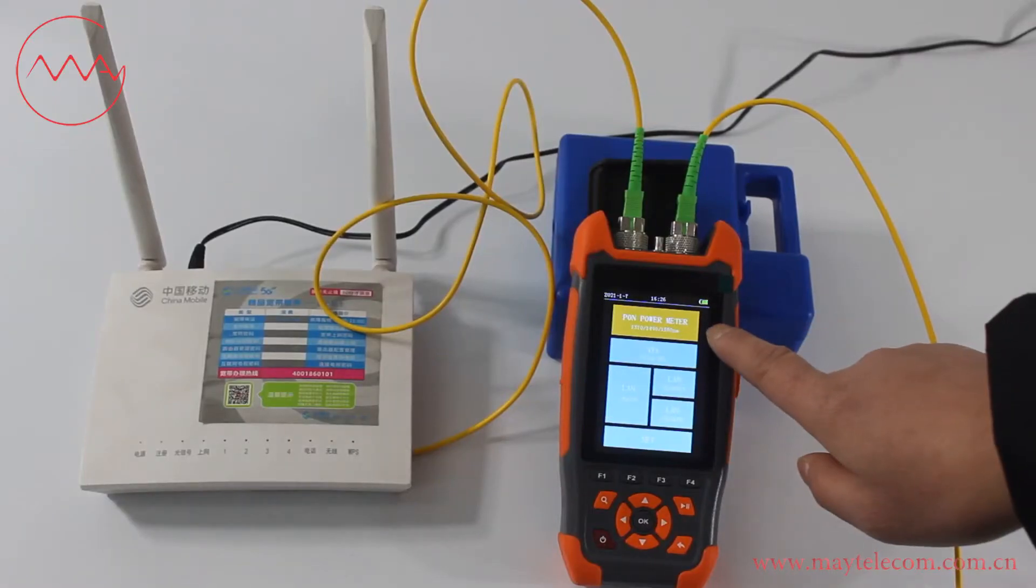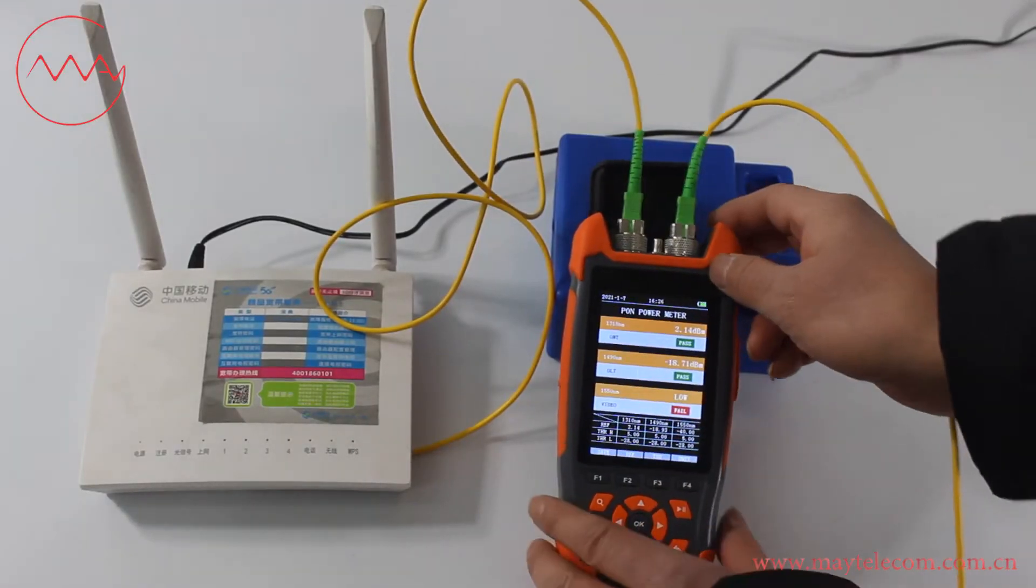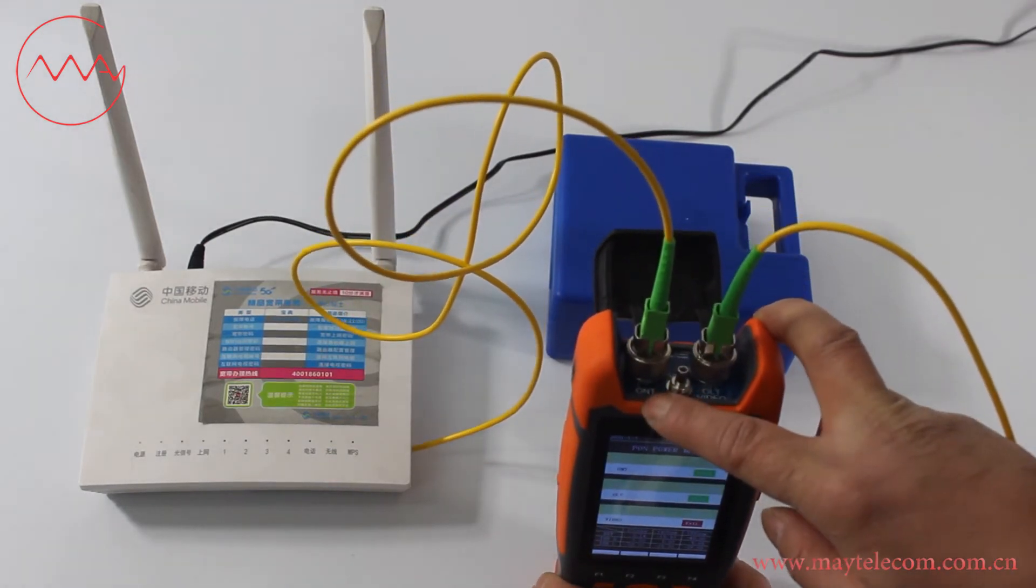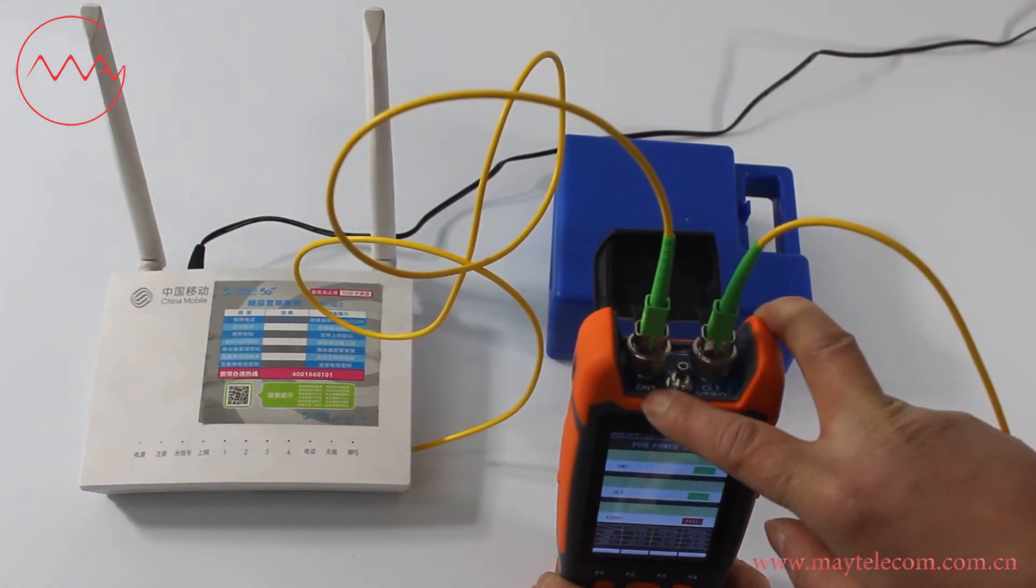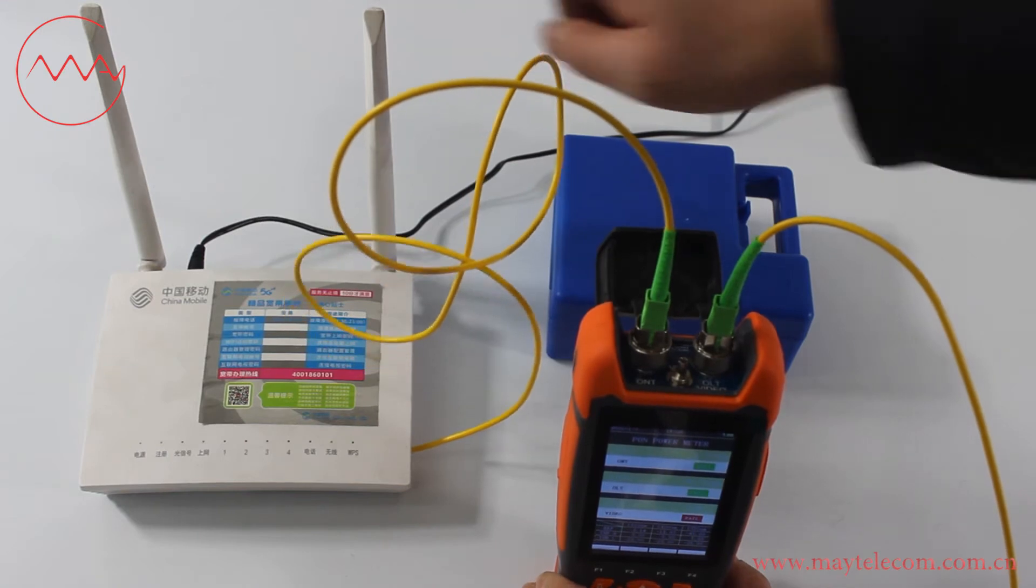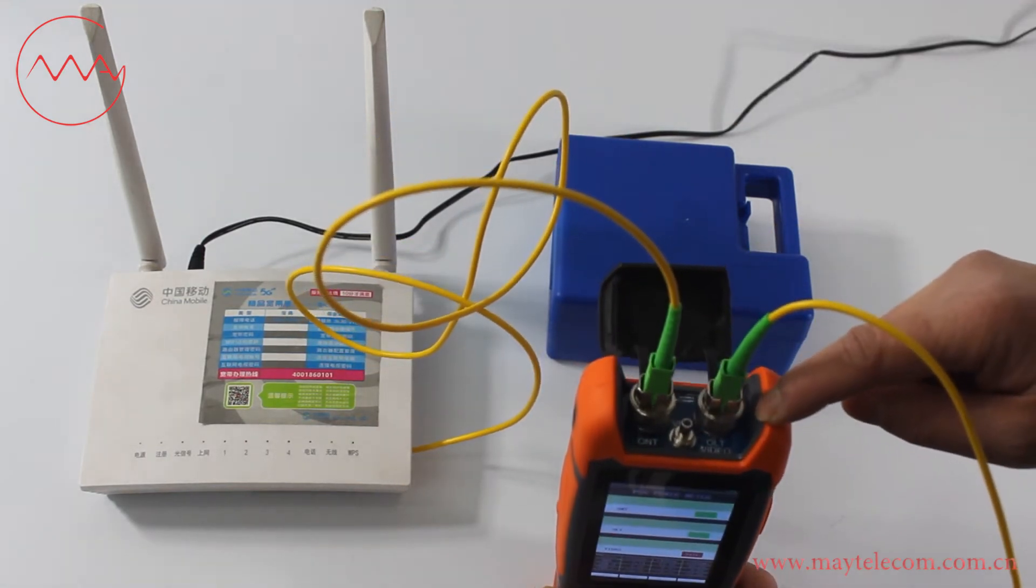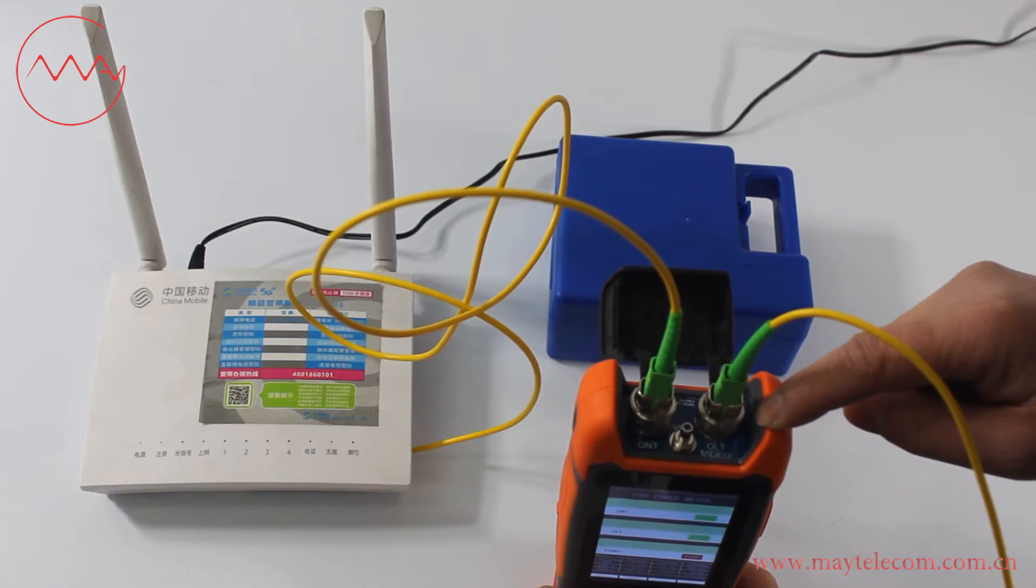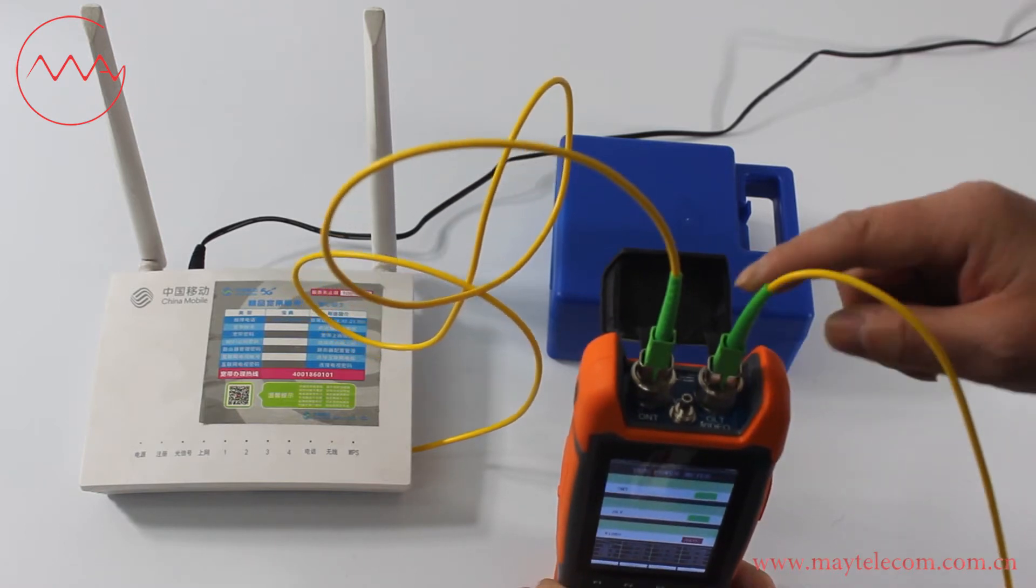Select pump power meter and press OK to enter. The ONT port connects the cable from the ONT side. The OELT and video port connects the cable from the OELT side.